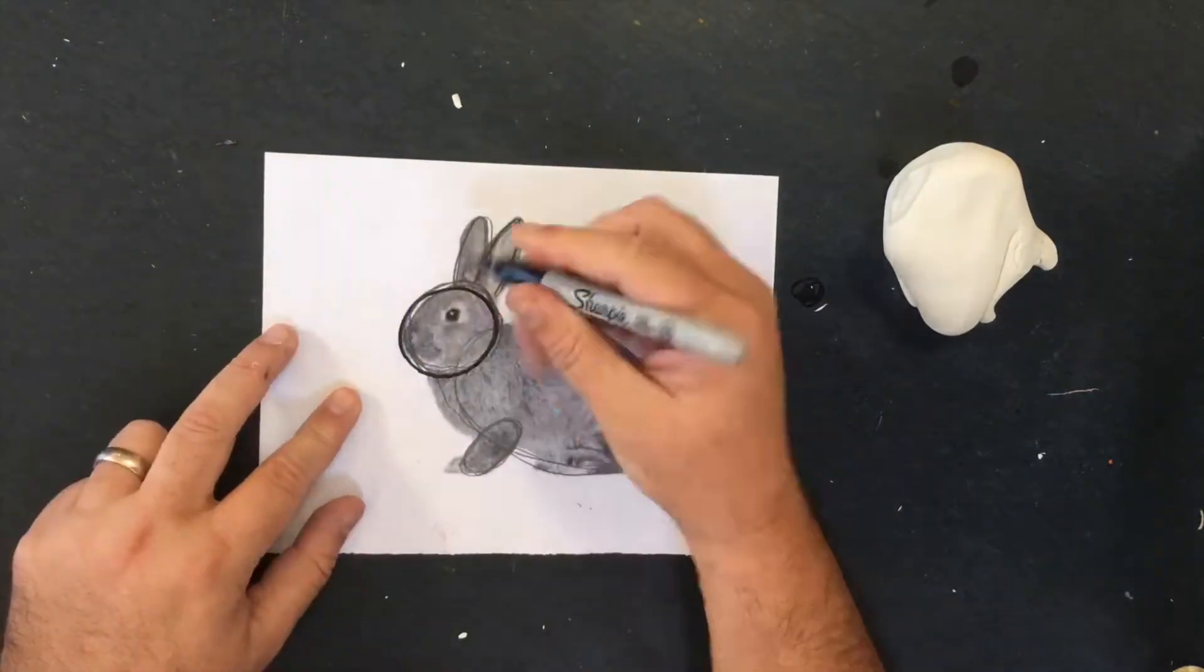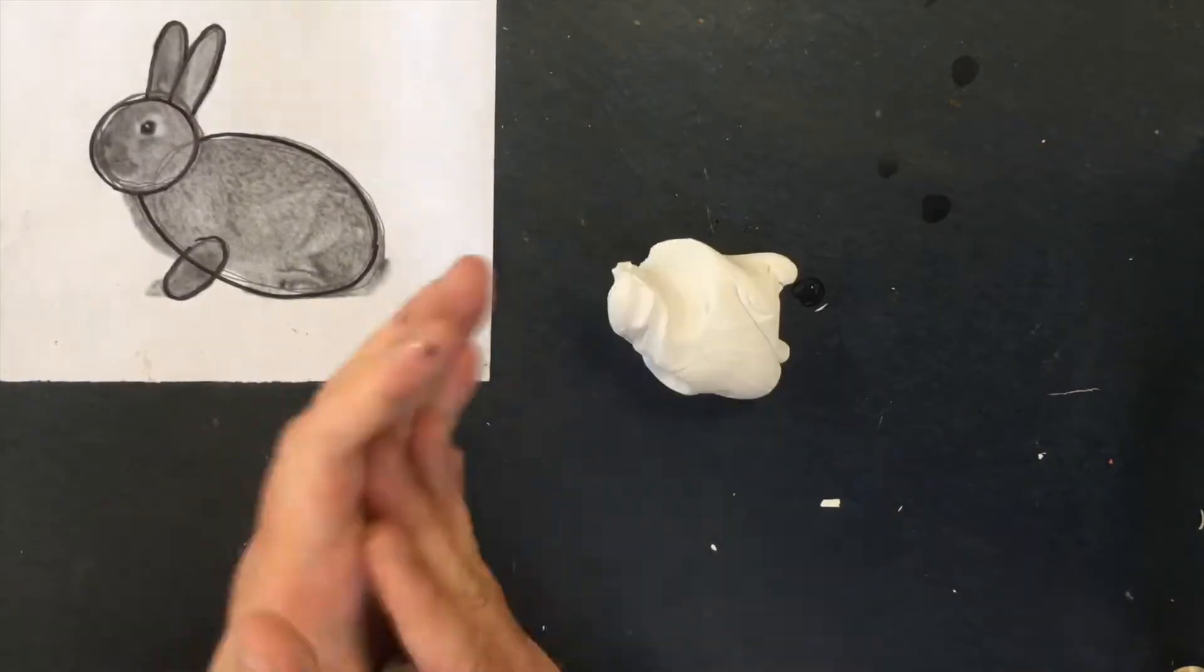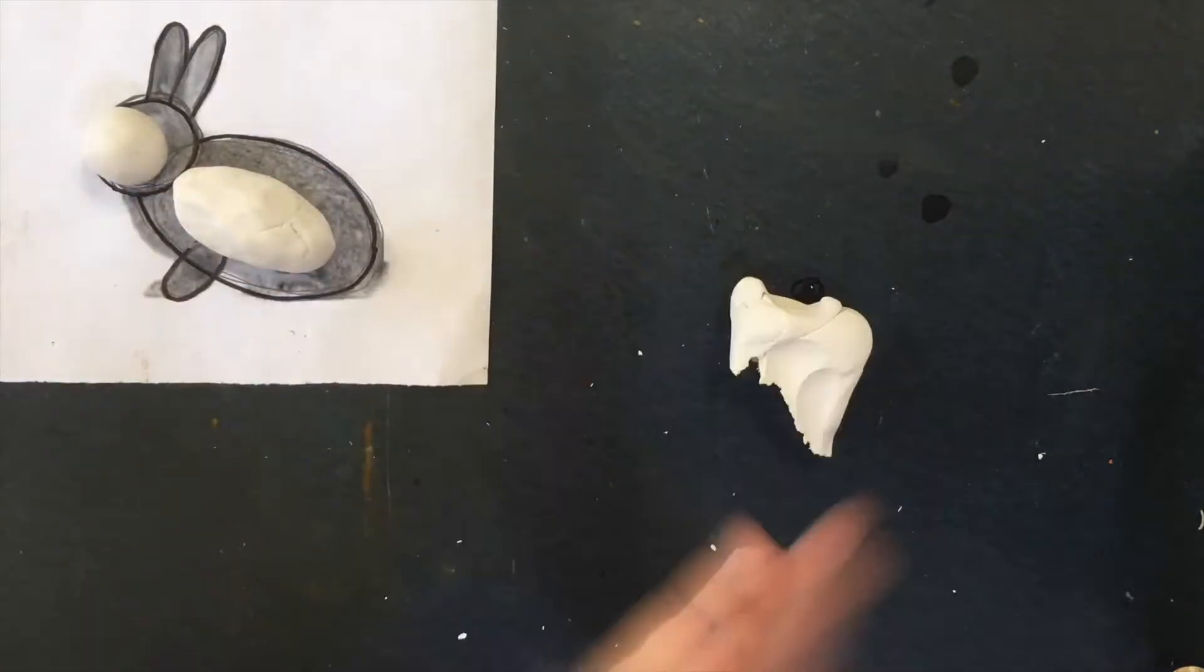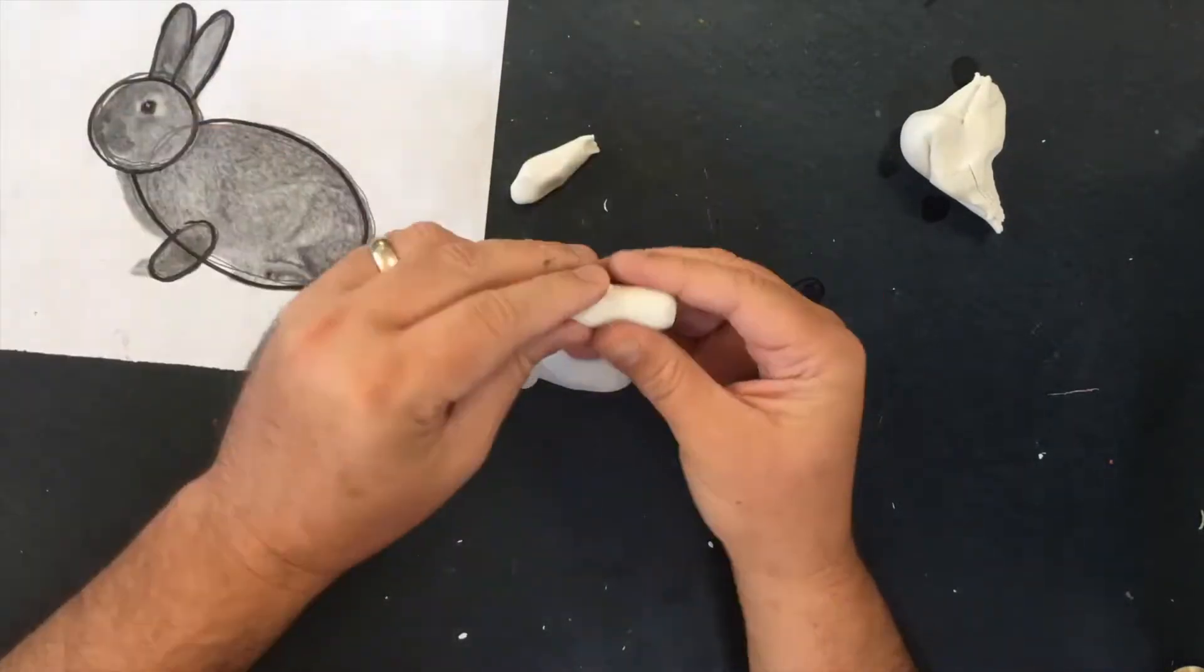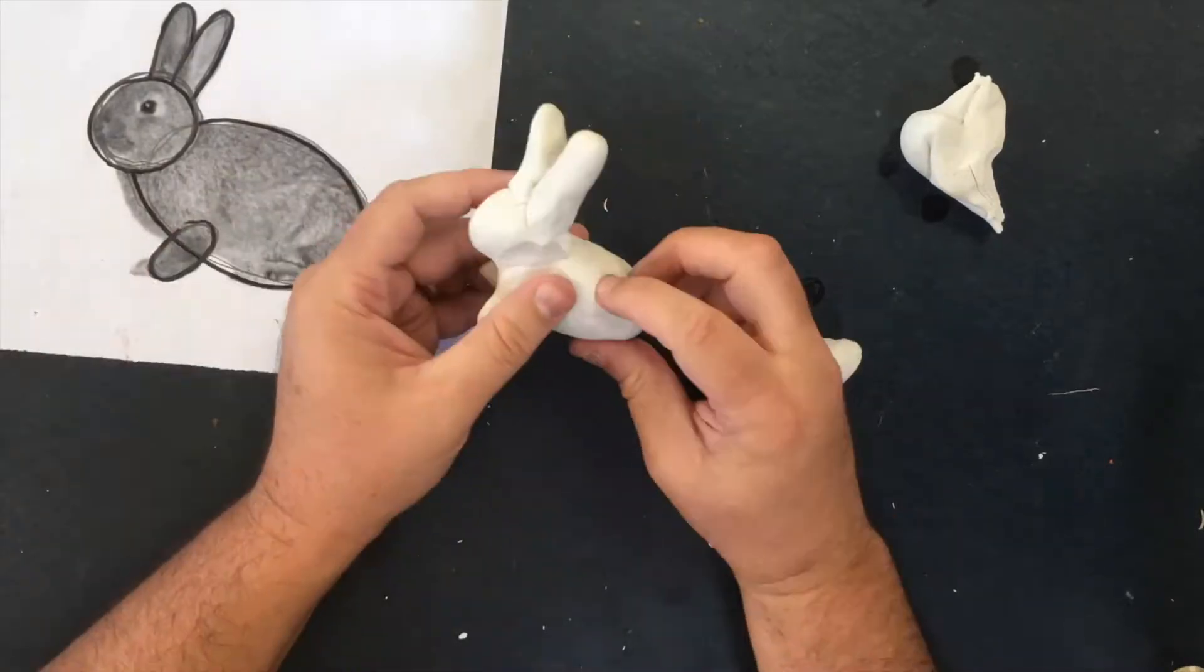The first lesson of drawing is that anything you want to draw is made of simple shapes. The same is true for sculpture, but you have to learn how to use your materials to make sure that your sculptures don't fall apart.